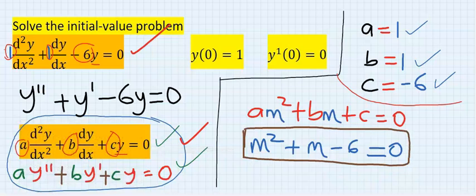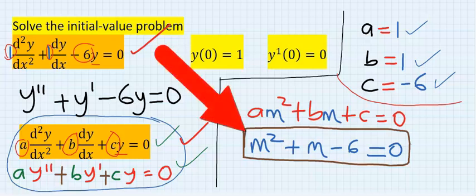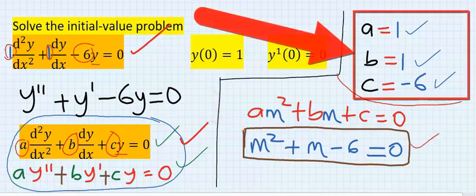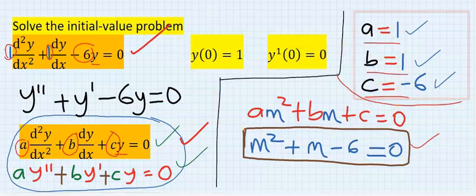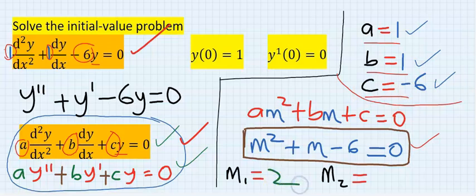Step number four: Use any quadratic equation formula or method to solve this. You have known the value of your a, your b, and your c. If you solve that, you're going to get two for m1.